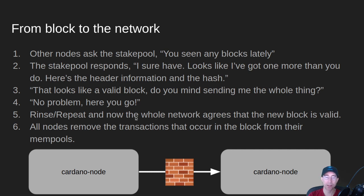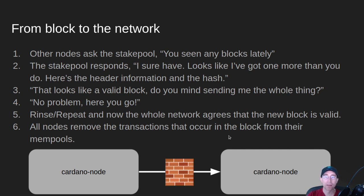Once all the nodes on the network have that new valid block at the tip of their blockchain, they remove all of those transactions in the block from the mempool, so that when the next block arrives, the next stake pool in line will not try to re-add the same transactions to the next block. And that, my friends, is how transactions and blocks make it around the network. Later, nerds.